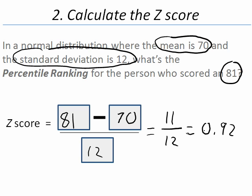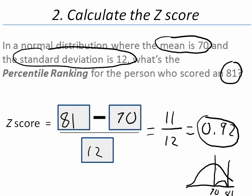The distance between the mean and z is 0.92. Our mean is 70, our value is 81, and the distance is not quite an entire standard deviation. We'll take this information, the z score of 0.92, to the z table. And in the z table, we'll look up this area between the mean and z.